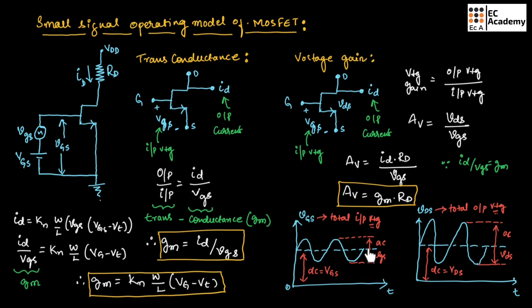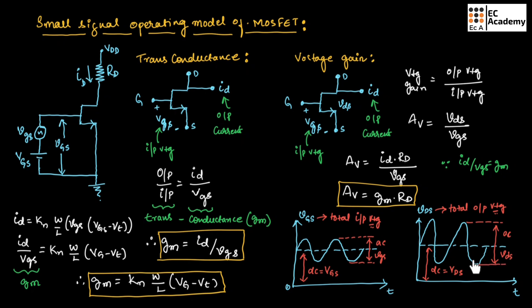This is the waveform for total input voltage, where DC voltage is VGS and AC voltage is small vgs, so small v capital GS is the total input voltage. This is the waveform for output voltage, where small v capital DS is the total output voltage, with DC voltage VDS and AC voltage small vds. As you can see, compared to the input voltage, the output voltage is amplified.